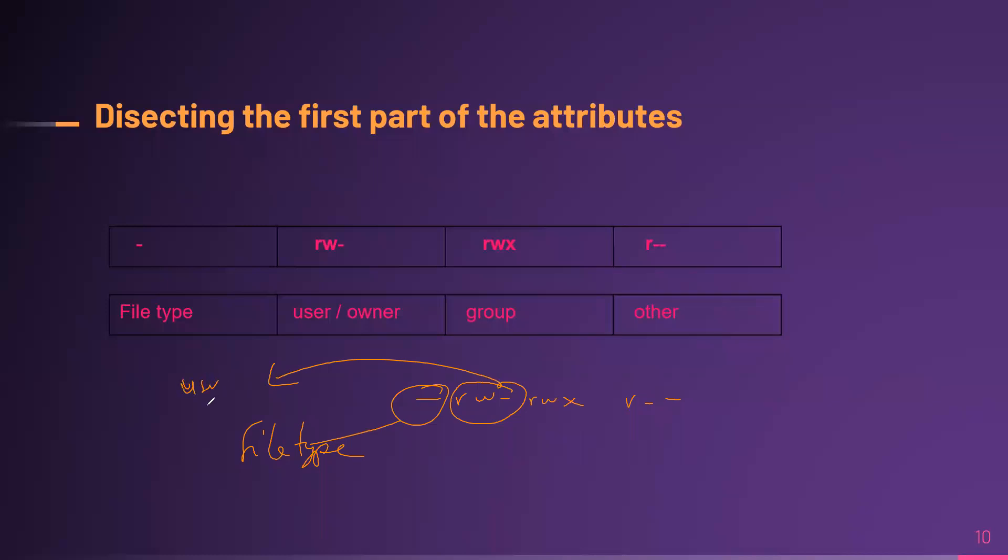So that will be the user, what a user can do. The first three are for the user and what they can do. This particular user can only do read and write.